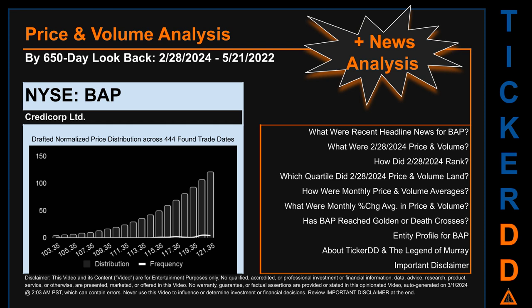Now that we have made our lawyers happy, capitalist brothers and sisters, let's get started. BAP went public on October 25th, 1995, which was roughly 28 years and five months ago. Looking back 650 calendar days from Wednesday, February 28, 2024 to Saturday, May 21, 2022, we found 444 applicable trade dates for use in our analysis. The chart shown on this page is our initial attempt at studying the price for BAP after dynamically normalizing price distribution across those discovered trade dates. The bar chart is the generated distribution, and the overlaid line graph is the frequency of the prices on the x-axis. Before we jump into price and volume analysis, let's look at recent headlines for BAP.